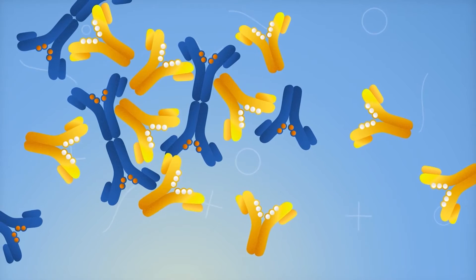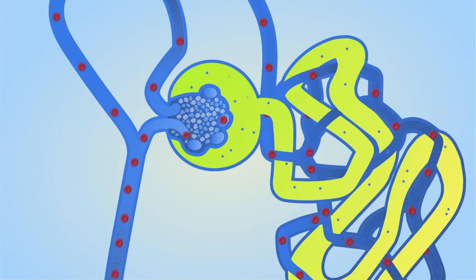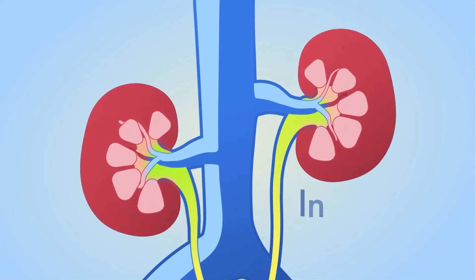These autoantibodies and the abnormal IgA combine to form complexes that get deposited in the kidneys. These complexes damage the kidneys by causing inflammation.